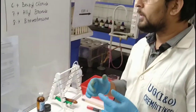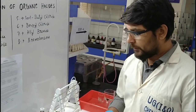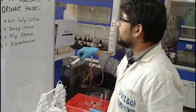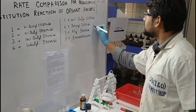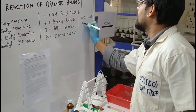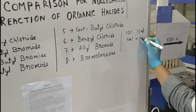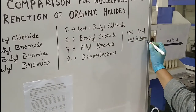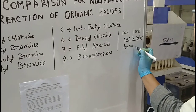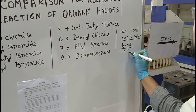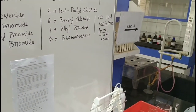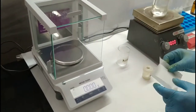Eight test tubes are required for 8 halides. First we are going to prepare the NaI solution. 10% NaI means 10% NaI in acetone — that means 1 gram NaI in 10 ml acetone. We have to weigh 1 gram NaI using the weighing machine.